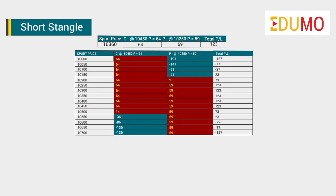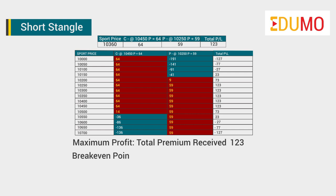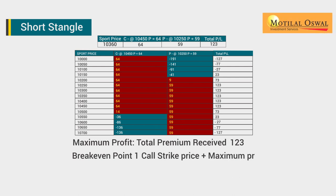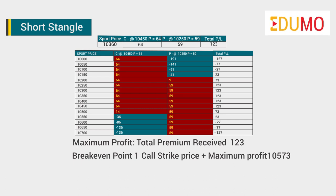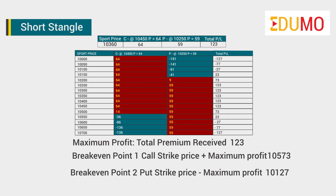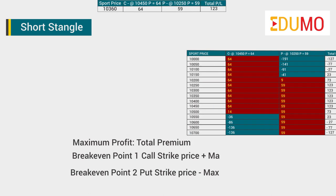Loss is unlimited as price rises or falls. Maximum profit is the net premium received. Breakeven point 1 is equal to 10,573, which is the call strike price plus maximum profit, and breakeven point 2 is equal to 10,127, which is the put strike price minus maximum profit.